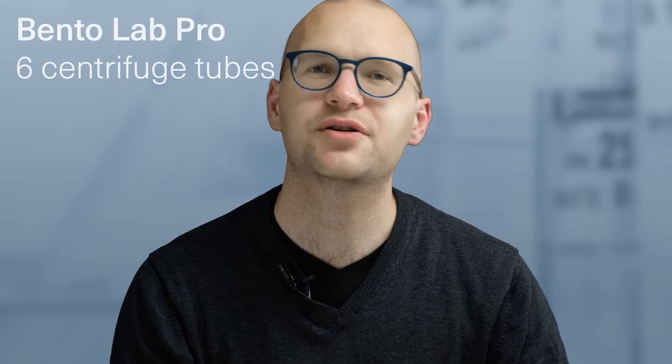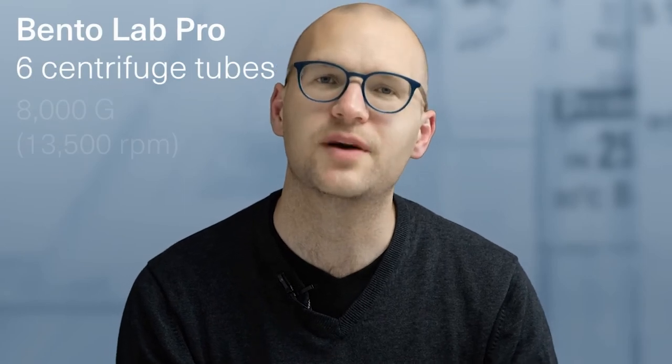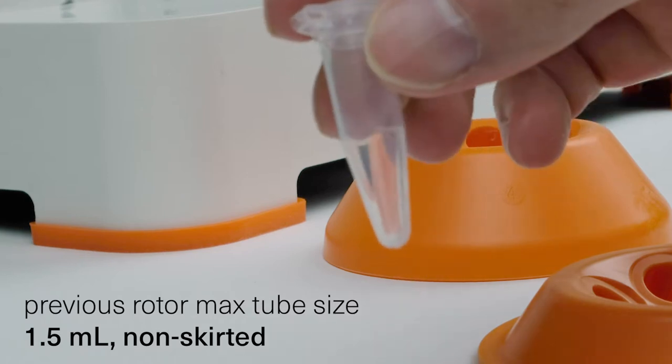The centrifuge module in Bentolab Pro can spin 6 microcentrifuge tubes with a force of up to 8000G. With the previous rotor version, the maximum tube size was limited to 1.5 milliliter volumes in non-skirted tubes.